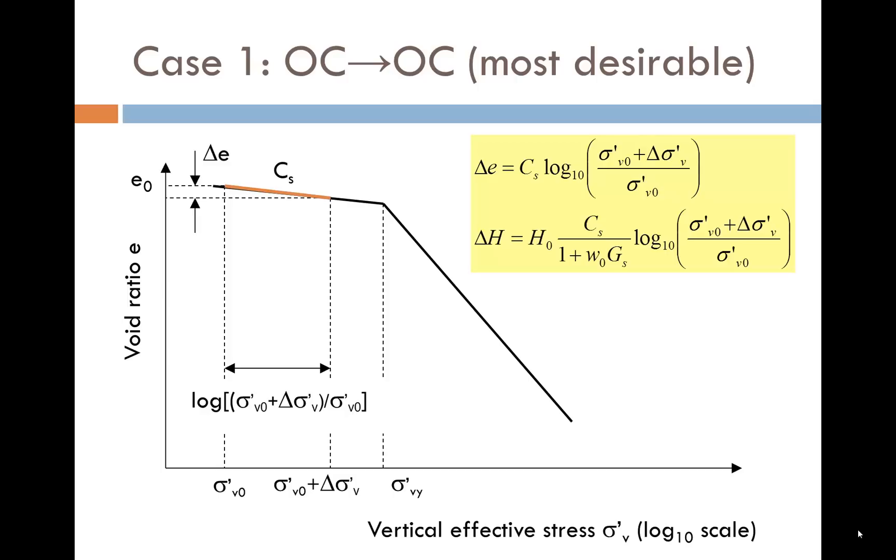There are three cases that we must consider. The first is if the soil is over-consolidated before construction and still over-consolidated after the increase Δσ'v due to construction. In this case, Δe is calculated based on the slope of the Cs line only, using a y equals mx type approach. The logs make the expression look more complicated than it really is. Plugging this expression for Δe into that on the previous slide, we get the expression shown for ΔH. This allows us to work out the settlement in the field.